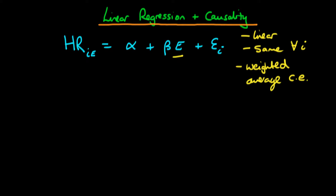What we're interested in deriving is the causal effect of exercise — specifically, the difference between the potential heart rate individual I would achieve if they exercised E plus one times versus just E times. Generally, we take the unconditional expectation of this difference, which gives us the average causal effect.